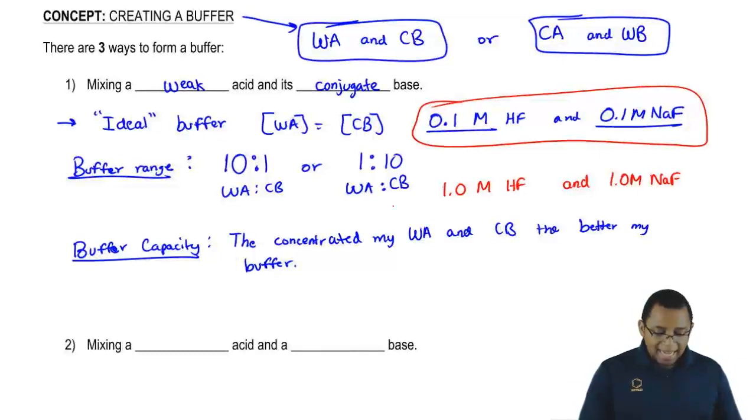Now, if we go back to this ideal buffer, we're going to say that's when they both equal each other. We're going to say that this is found at our half equivalence point. When we reach the half equivalence point, that's when we have an ideal buffer.